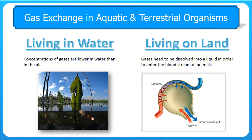Conversely, living on land, the problem is that the gases are in the air. Gases in the air can't get into the bloodstream of the organism until they have been dissolved into a liquid. When oxygen moves into the alveoli, as we can see here, it's still in gaseous form, and before it can move into the capillary it needs to be dissolved. So there is a moist surface on the inside of the alveoli, and other organisms have similar adaptations so that oxygen can dissolve into that moist surface and then move across into the blood of the capillary.